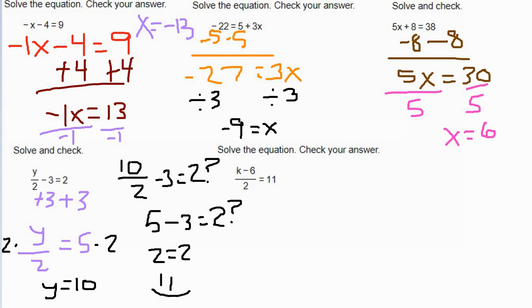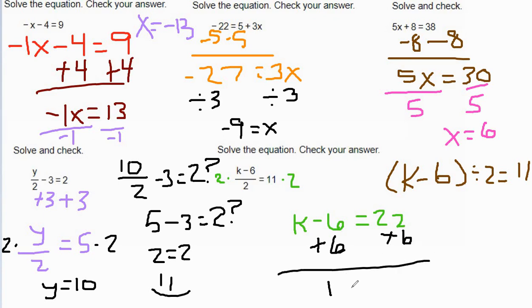Last one on here, k minus 6 all over 2 equals 11. This is the same thing as if I wrote k minus 6 in parentheses divided by 2 equals 11. I like the fraction more. We're going to multiply both sides by 2 first to get rid of the fraction. That's going to give me k minus 6 equals 22. Opposite of subtracting 6 is adding 6. And that's going to give us k equals 28.